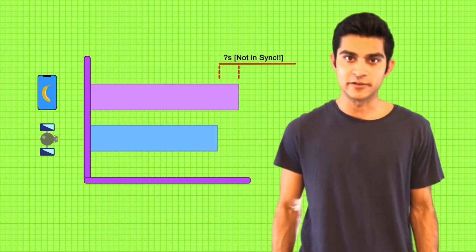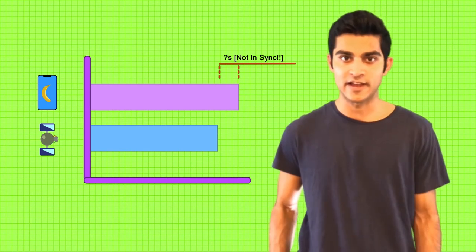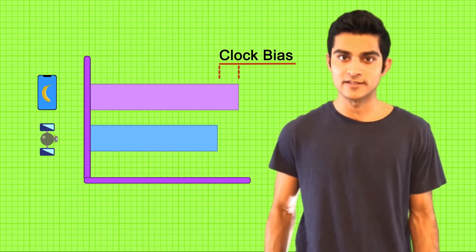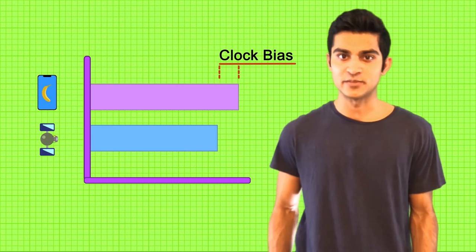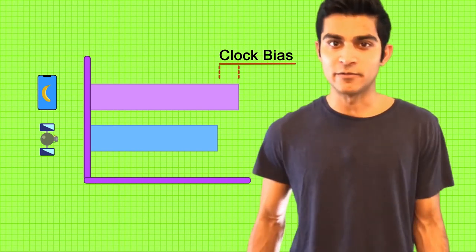The unknown time difference between your phone clock and the atomic clocks on the satellites is called clock bias and is a real issue with GPS positioning. Luckily, there's a way to get around it.